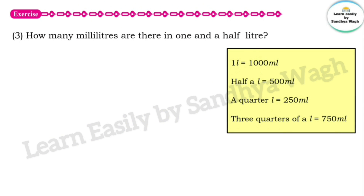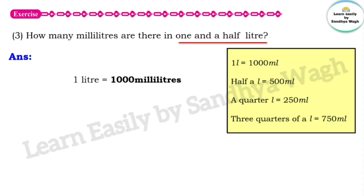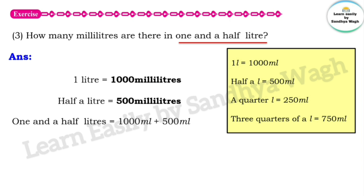Next question: how many millilitres are there in 1 and a half litre? One litre is equal to 1000 millilitres, and half a litre is 500 millilitres. So for 1 and a half litre, we add 1000 millilitres and 500 millilitres. 1000 ml plus 500 ml equals 1500 millilitres.